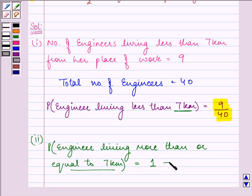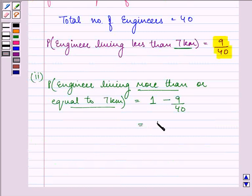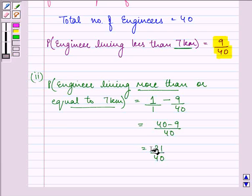If we subtract 9 by 40 from 1, we will be able to get the probability that the engineer is living more than or equal to 7 km. On simplifying, we have 40 minus 9 by 40, that is 31 by 40. This is the required second part's answer.